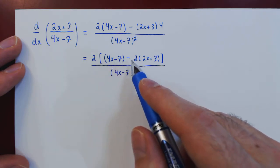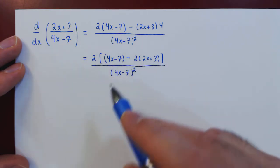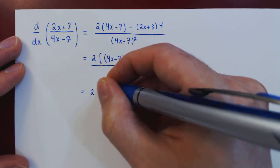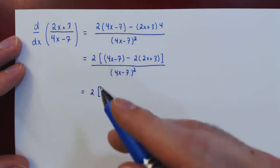Now that we have no remaining common terms in these two terms, we can multiply things out and then regroup. So we have 4x minus 7.